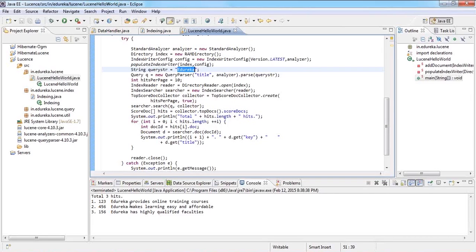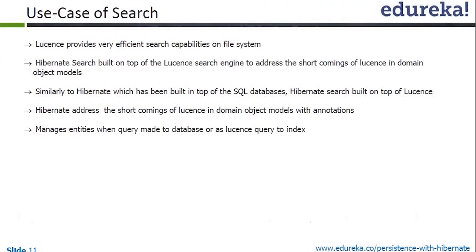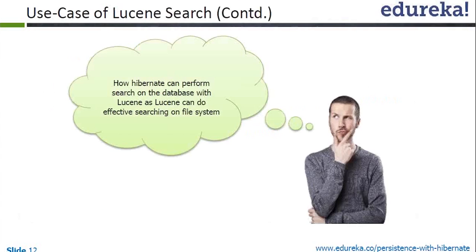This is why I said Lucene is extremely powerful. Now, what can Hibernate do here? We saw the use case — I created three files, gave them to Lucene, it created an index and searched just like that, everything in a matter of seconds. You can understand how powerful Lucene search is, that's why data analytics relies on it. Now continuing the use case — how is Hibernate going to provide this? We have to do this with tables now, not just with the file system. Lucene is very powerful for the file system, so is Hibernate going to give a solution?